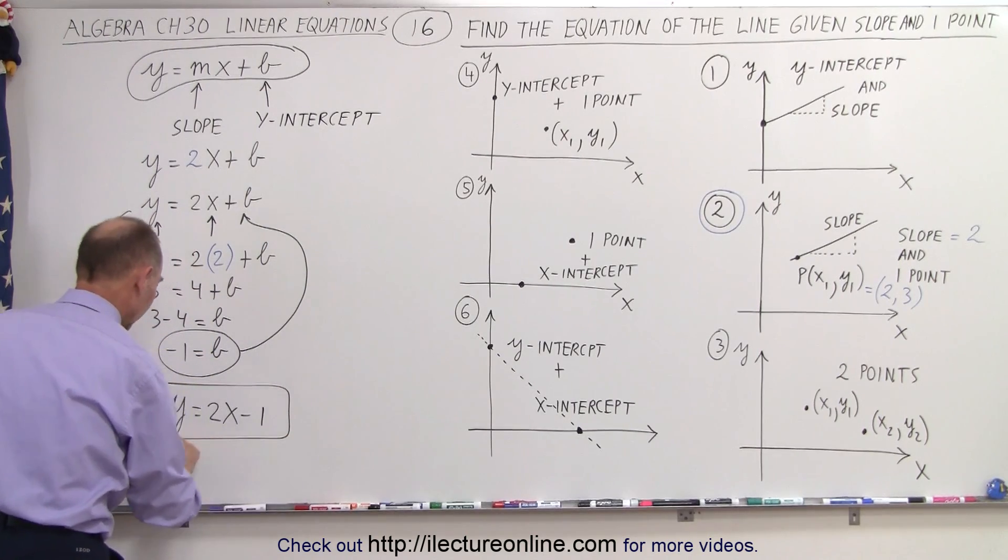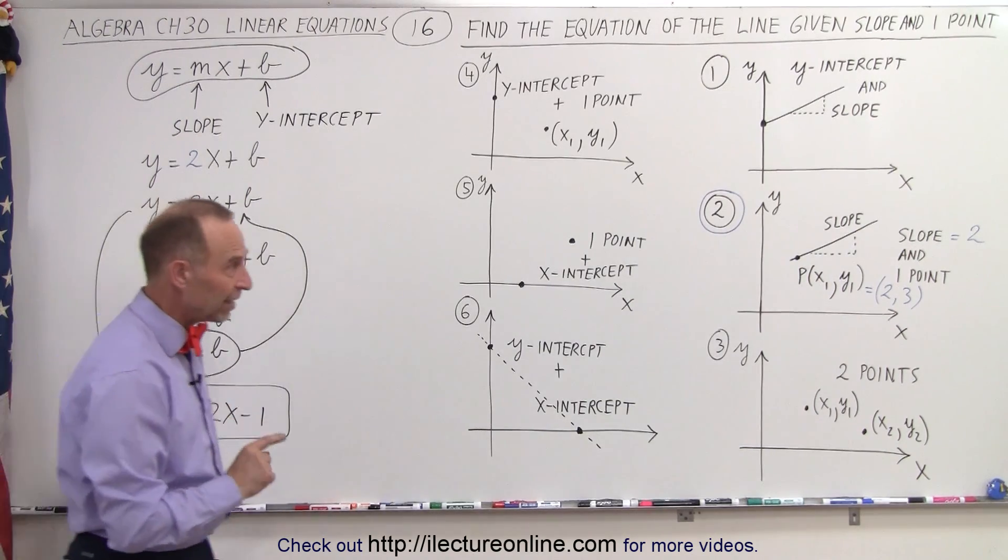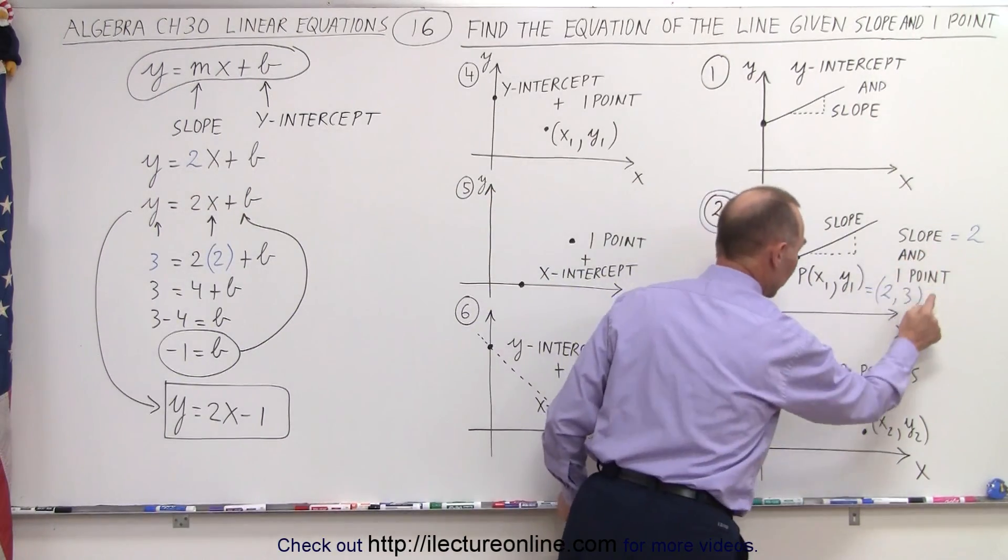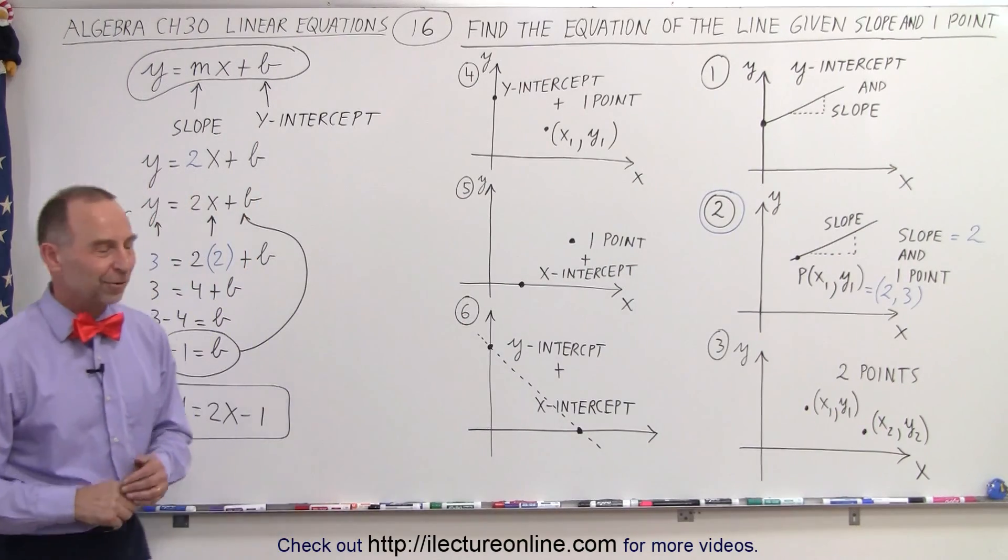And there it is. That's how easy it is to find the equation if they give you the slope and one point on the line. That is how it's done.